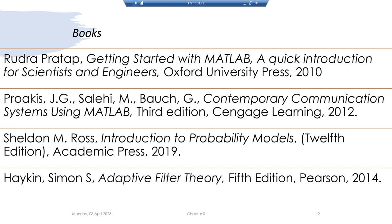For Markov chains and random processes we will use Sheldon Ross's book 'Introduction to Probability Models,' 12th edition, published in 2019. At times we will need to cover topics related to linear regression and some basic ideas from machine learning. For those we will use Simon Haykin's 'Adaptive Filter Theory.' Note that we won't be doing a pure machine learning course — we will do the linear flavor of it, which is adaptive filtering.